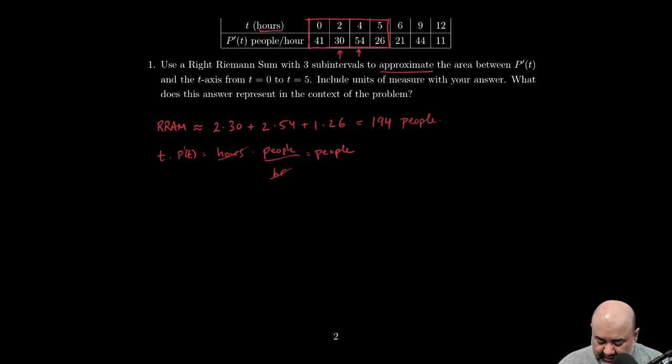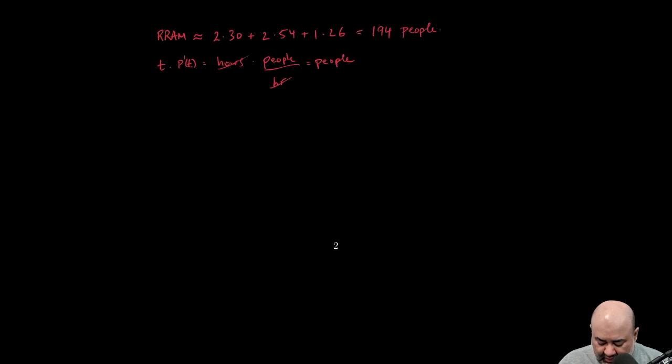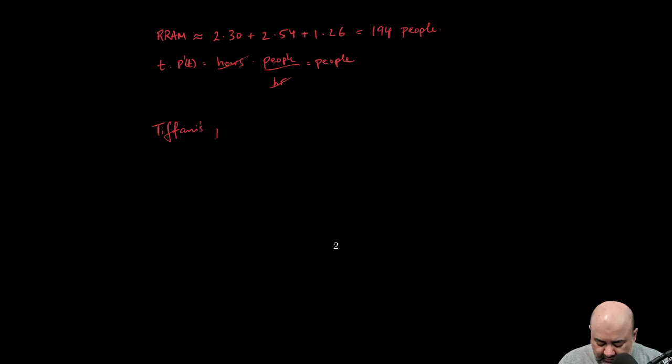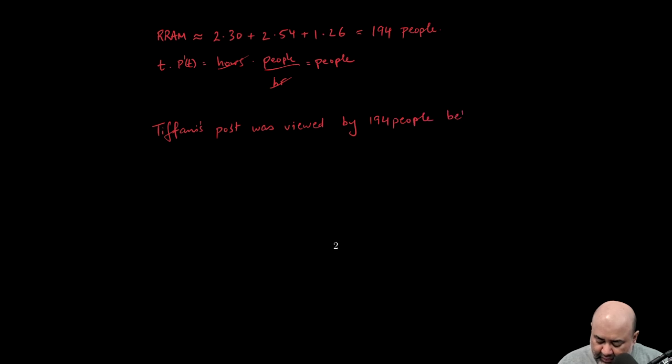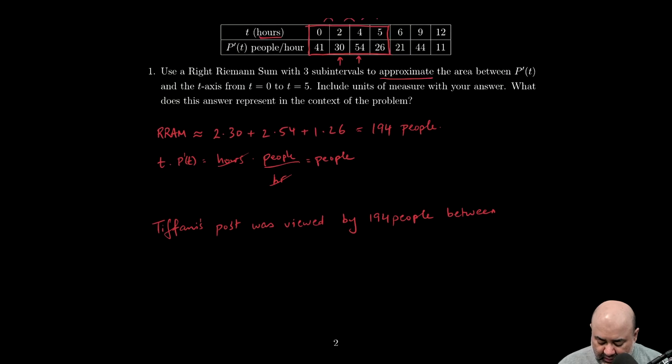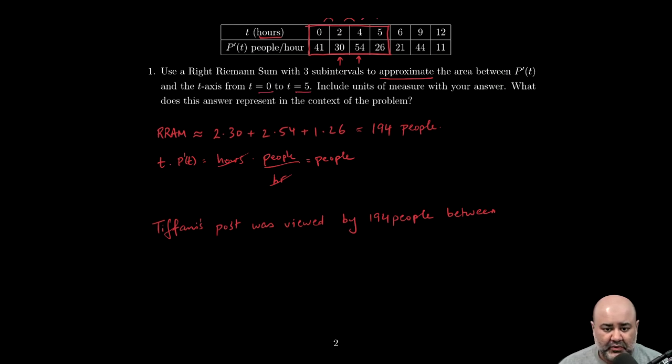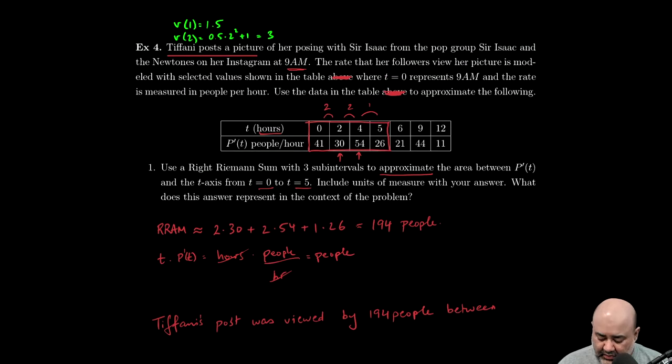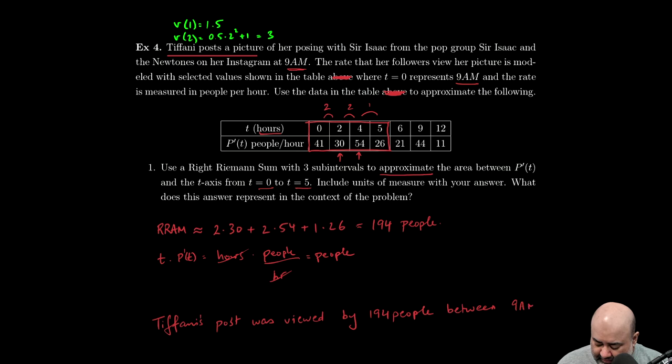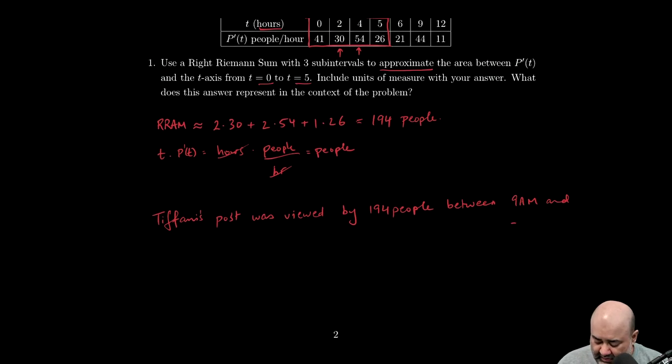What does the answer represent in the context of the problem? Here I'm just going to copy paste what the problem gives me. She posts a picture, so the picture is what is presumably being watched. So Tiffany's post was viewed by 194 people between—and now here's where you have to be careful. The question is asking us to represent the answer in the context of the problem. We cannot say between t equals zero and t equals five; that would be insufficient. You'd lose the contextual explanation point for that. You have to change the zero back into what the original time scale was. So we were told that zero represents 9 AM, so this will be between 9 AM and t equals five. So five hours from 9 AM is 2 PM, so this would be between 9 AM and 2 PM.